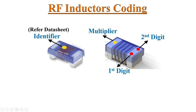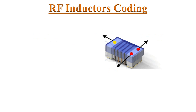If there are three dots, two dots lie on one end and one dot is printed on the other end. The two dots are read from bottom to top and indicate significant digit values. The single dot on the other end indicates the multiplier. The value of inductance is obtained in nano-Henrys.